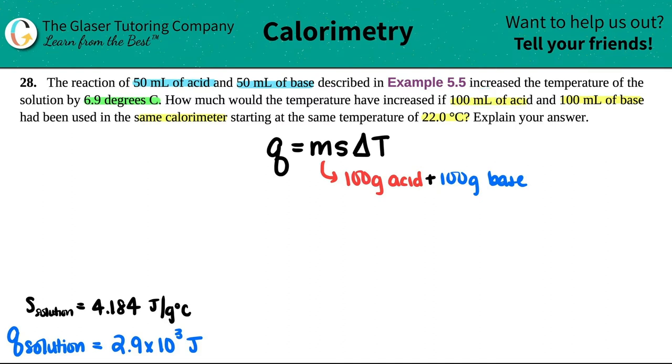Now we're going to be taking the specific heat of water, which was from 5.5, so this would be 4.184 joules per gram degree Celsius. If we're keeping the same calorimeter, I'm assuming that it's going to be the same amount of heat that was produced. So this number would be the same.